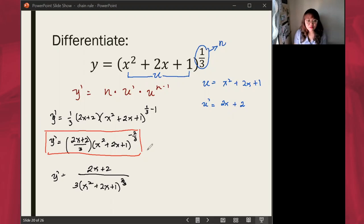If you want to transform it to a radical expression, you'll have 2x plus 2 all over 3 times, take note of this, the cube root of the whole expression x squared plus 2x plus 1 squared.